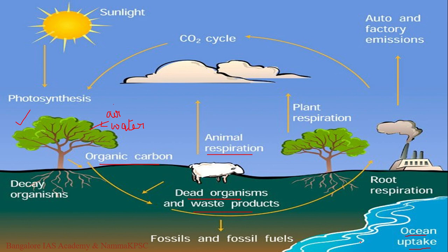It is only after millions of years, through tectonic activity, when this layer is pushed up and exposed to weathering and erosion, that carbon may be released back into the cycle. Organic carbon may also get buried under layers of earth and stored in the form of oil, coal, or natural gas, only to be released when humans burn fossil fuels. Carbon dioxide may also be released into the atmosphere through volcanic eruptions.